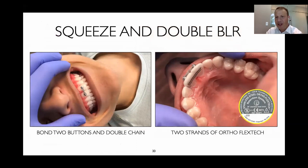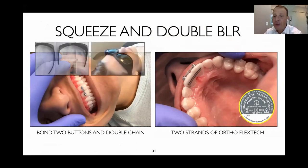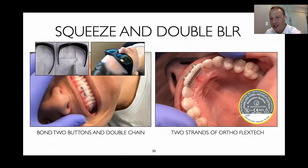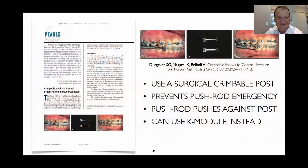In my office, I like to use bond-to-braid in my upper arch, but when I use a double bonded retainer — a splinted retainer — especially for thick biotypes where I'm worried about holding a diastema, I think you actually need to use ortho flex tech rather than two strands of bond-to-braid.